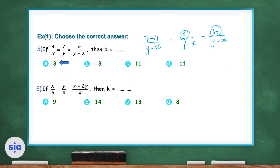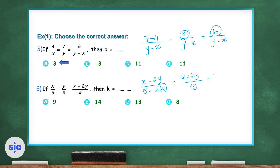For question 6, if x over 5 equals y over 4 equals x plus 2y over k, then find the value of k. To find the third ratio, we added the first ratio to double the second ratio. So x plus 2y will be 5 plus 2 times 4, giving x plus 2y over 13. This equals x plus 2y over k, so k equals 13. The correct answer is choice C.